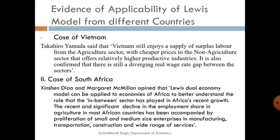The next topic is evidence of applicability of the Lewis model from different countries. The first is the case of Vietnam. A study shows that Vietnam still enjoys a supply of surplus labor from the agriculture sector at cheaper prices, moving to the non-agriculture sector that offers relatively higher productive industries. It is confirmed that there is still a diverging real wage rate gap between the two sectors, making Lewis's model applicable to Vietnam.